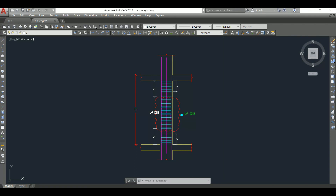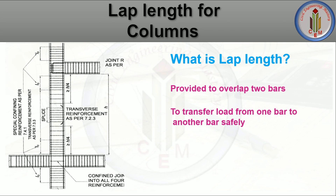First, let's discuss what is lap length. It is the length provided to overlap two bars. When we need to overlap two bars, we need to provide the lap length, and this lapping helps to transfer the load from one bar to another bar safely. The slab load transfers to the beam and the beam transfers the load to the columns. When the column carries the load, it transfers through the reinforcement bars. So to transfer the load from the top bar to the bottom bar safely, we provide some overlap length — that length is called the lap length.